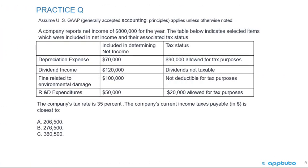One last question to finish this LOS — assume US GAAP applies. A company reports net income of $800,000 for the year. Selected items: depreciation expense in net income was $70,000, but $90,000 was allowed for tax; dividend income of $120,000 was included in net income but was not taxable; a fine for environmental damage of $100,000 was deducted on the income statement but is not deductible for tax purposes; and R&D expenditures of $50,000 were deducted on the income statement but only $20,000 was allowed for tax. The company's tax rate is 35%. The company's current income tax payable is closest to A: $206,500; B: $276,500; or C: $360,500.